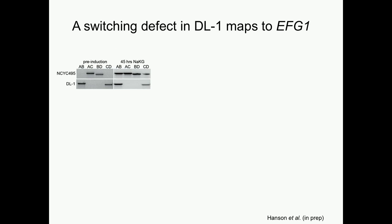We moved on to a different approach using a strain of Hansenula polymorpha called DL1. DL1 is one of two primary laboratory strains; the other is NCYC 495. NCYC 495 switches beautifully when grown in NAKG, but DL1, no matter how long you grow it in NAKG, never shows the appearance of the opposite mating type. It's also referred to in the literature as semi-sterile — it's not a very good mater either. So there seems to be some problem with the induction of the mating response in this strain.